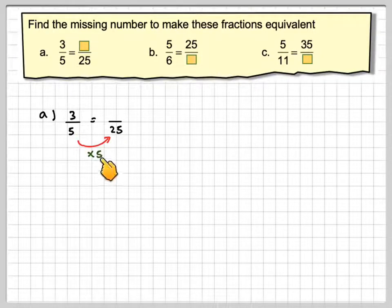The answer is we multiply the denominator by 5. If we've done that to the denominator, we must also do it to the numerator. So 3 times 5 gives us 15 over 25. Therefore, 3/5 is equivalent to 15/25.